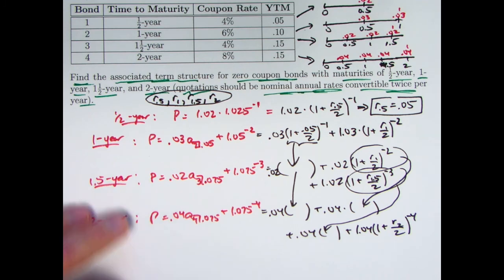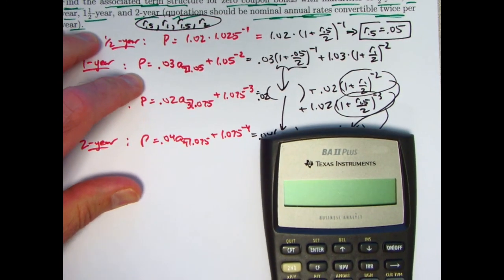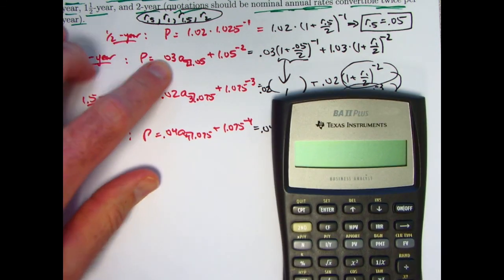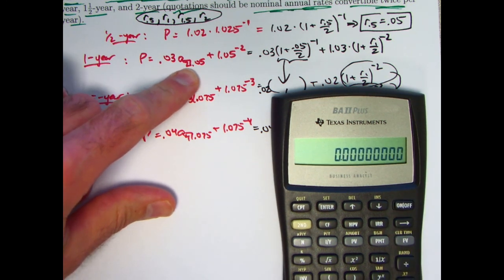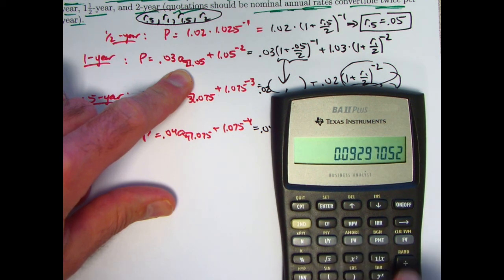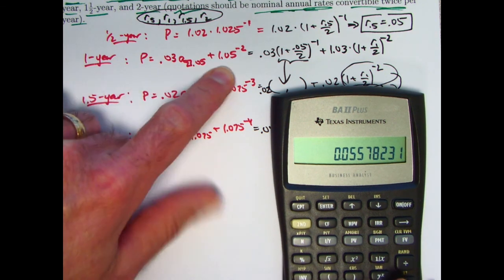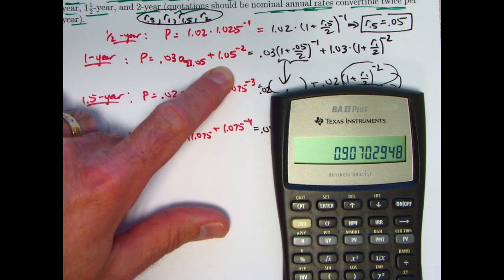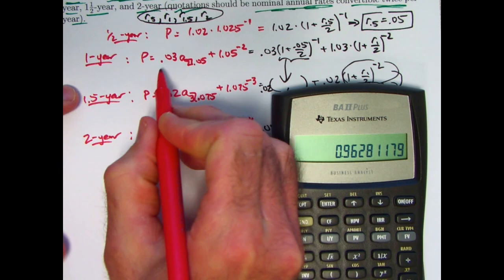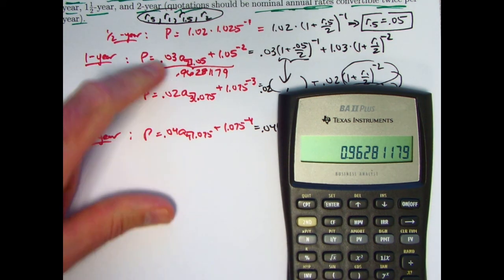So now comes the calculator work — this is the point where you may want to skip to the end. Let me focus first on finding the price for the one-year bond. A-angle-2 at 0.05: take 1.05 reciprocal, square it, subtract from one, divide by 0.05 — that's the annuity value, times 0.03. Store that in register 1. Then 1.05 to the negative 2 plus what's in register 1. This price is approximately 0.96281179. I'll store that in register 7.